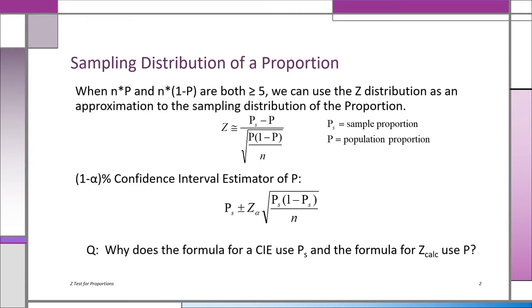As always in the formula for z, what population parameter are we using? The one under the null hypothesis. So when we're taking ps, the sample proportion, minus p, we're using the sample proportion in order to make inferences about p. We don't know p — we don't know the population proportion — but we're doing a hypothesis test. We have a hypothesis, and that's the value of p that we use.